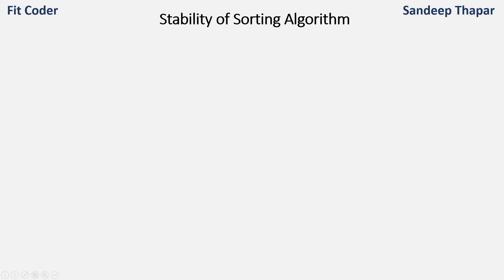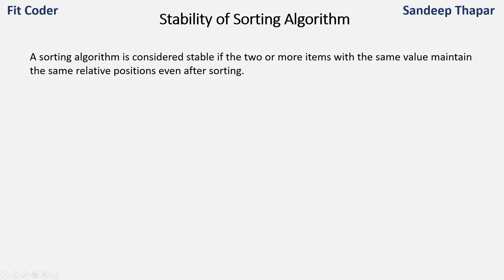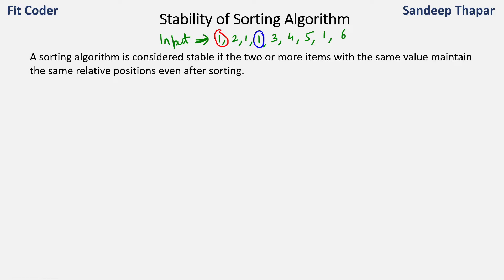Now comes the stability of a sorting algorithm. A sorting algorithm is considered stable if two or more items with the same value maintain the same relative position even after sorting. When dealing with primitive data types like integers or characters, this might not matter much, but when using a structure or sorting complex objects, the stability factor becomes important.